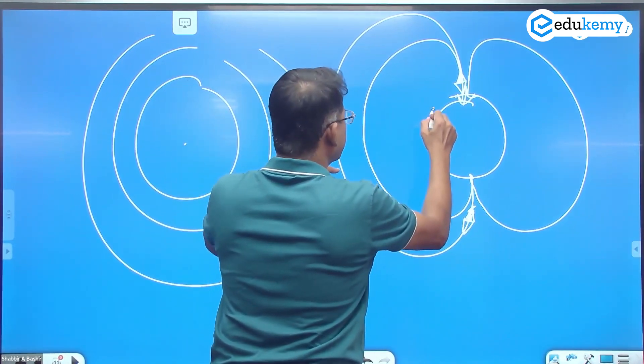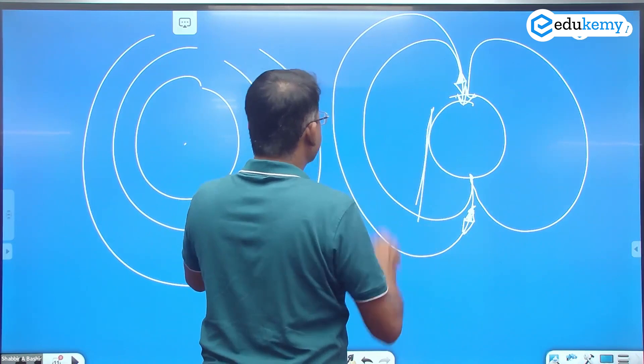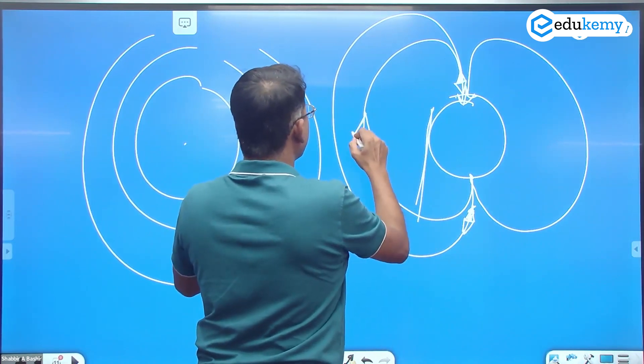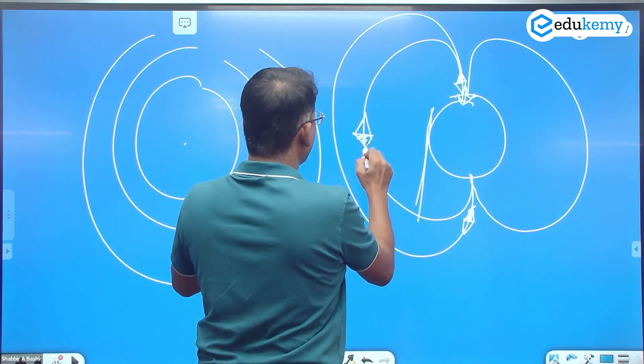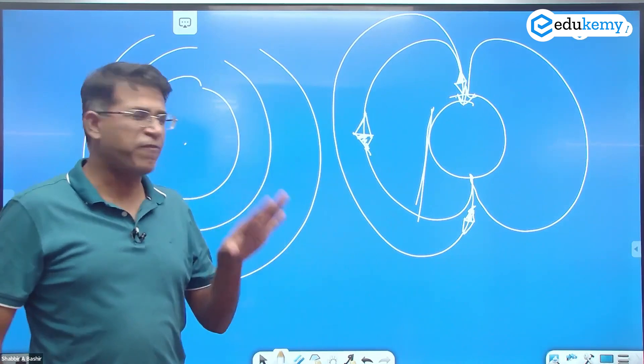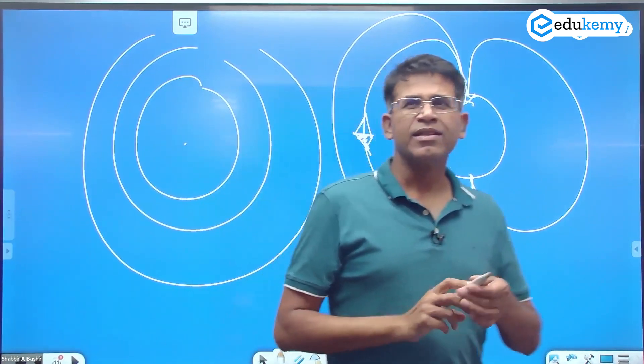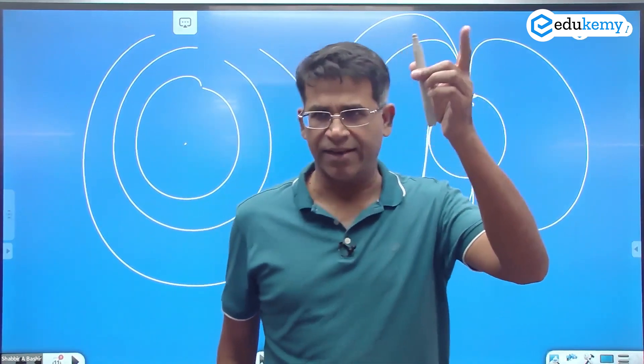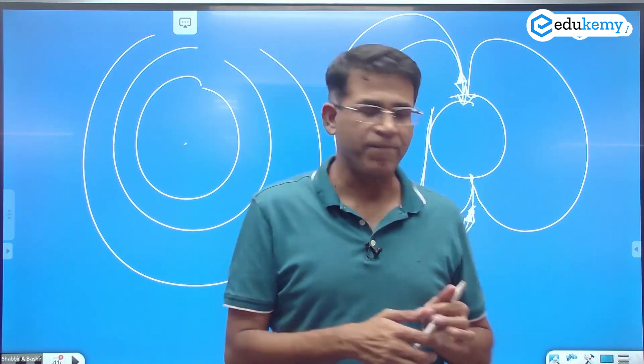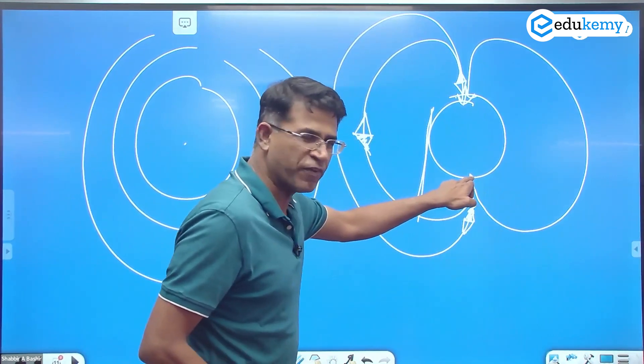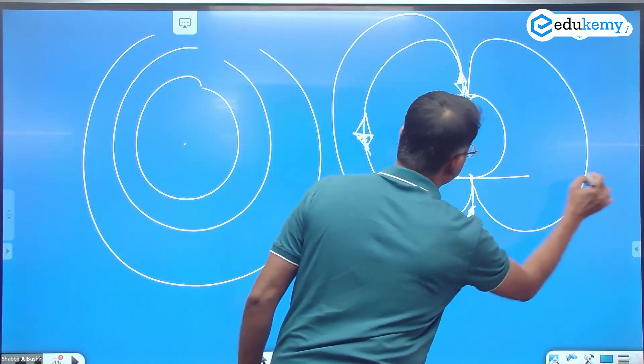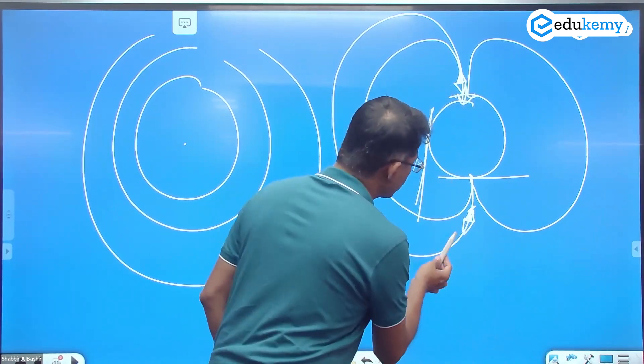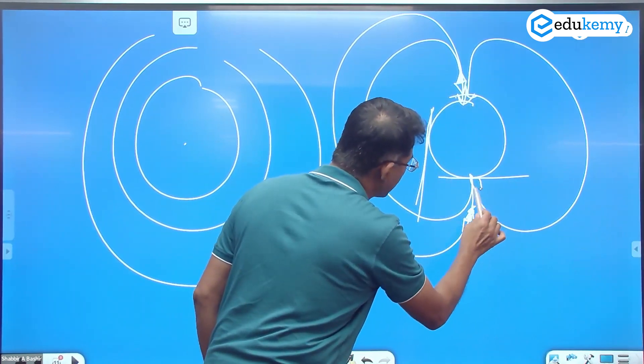But if you come here, somewhere here, agar yeh earth ka surface hai, surface like tangent here, the needle is like this. Can you all imagine? So if I compare the angle of the needle with the surface horizontal, this is the point on surface, I can draw tangent here. Yaha par the needle is almost at 90 degrees.